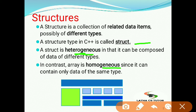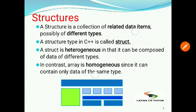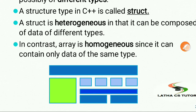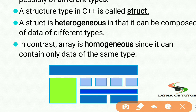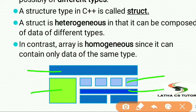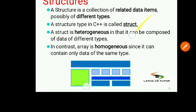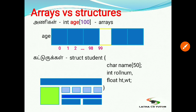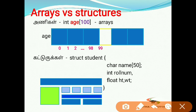A structure may contain a long element, a float element, an integer element, or a character. So a structure consists of different data types in one variable. In the picture, you can see the diagrammatic representation of arrays and structures.